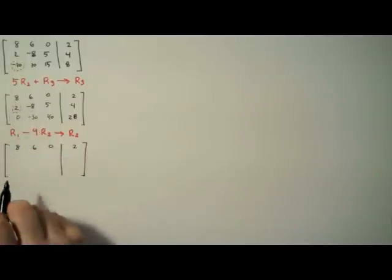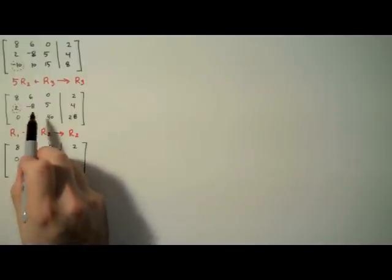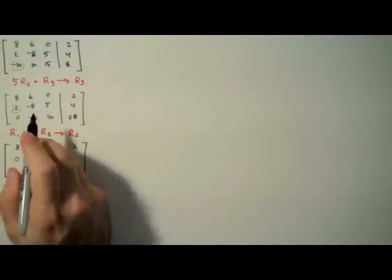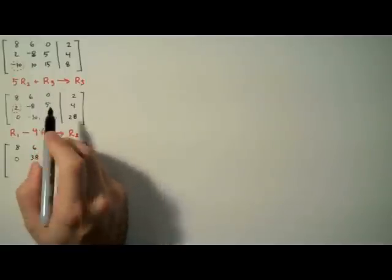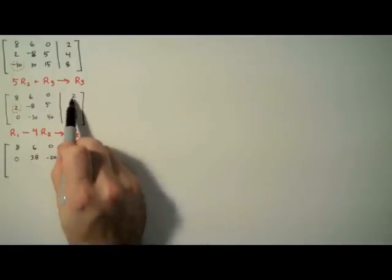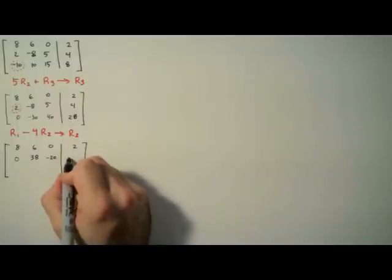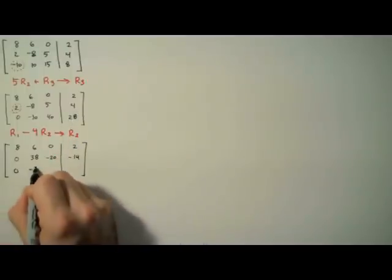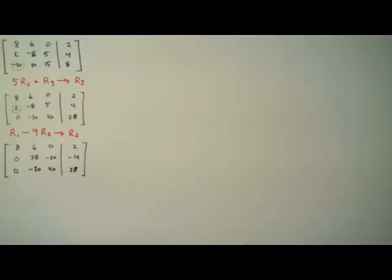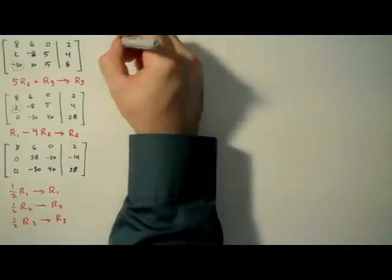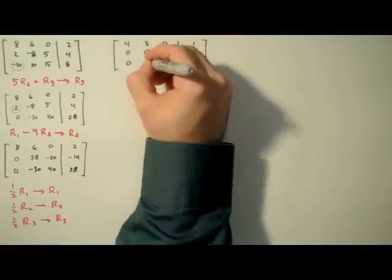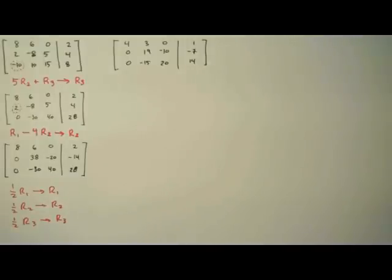So 8 minus 4 times 2, that gives us a 0 we want. 6 minus 4 times negative 8, that's going to give us 38. 0 minus 4 times 5, that's a negative 20. And 2 minus 4 times 4, that's going to give us negative 14. And we simply rewrite the third row. Okay. Now at this point, all of our entries are even numbers. So we're going to do three steps in one multiplying each row by one half. And that brings us to Funky Town.